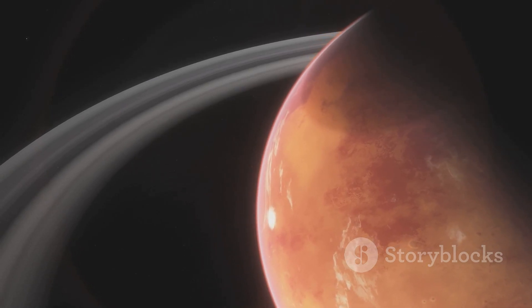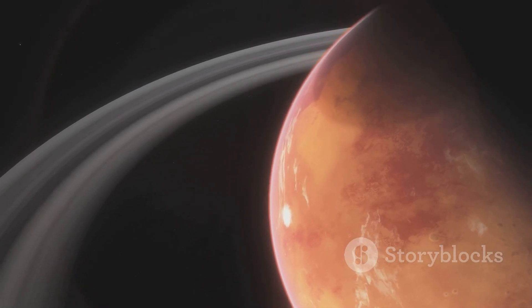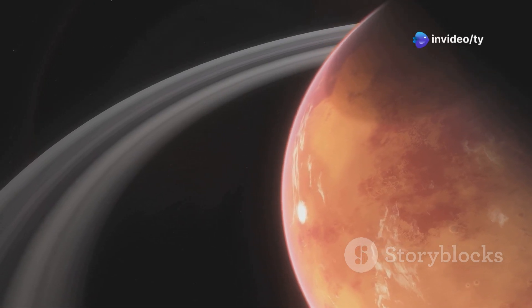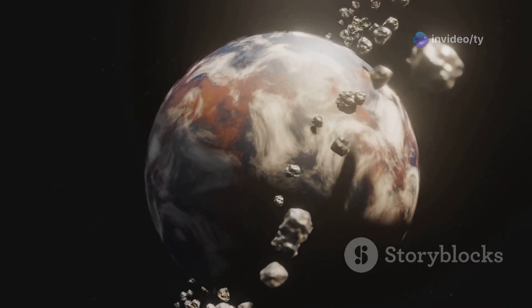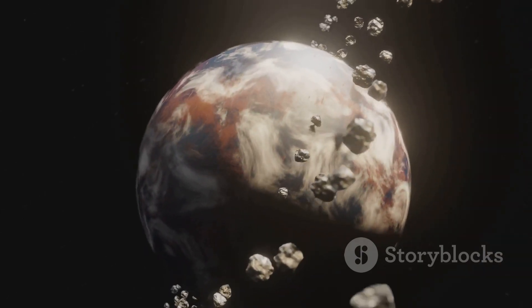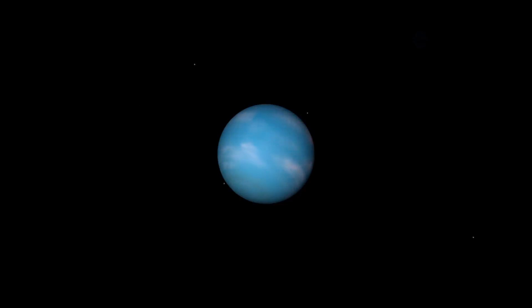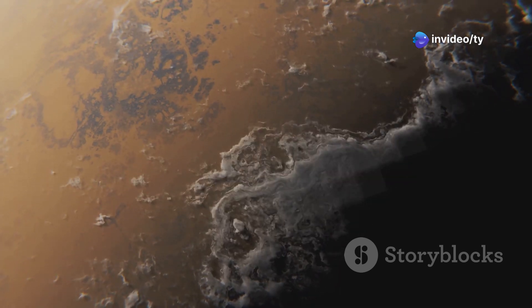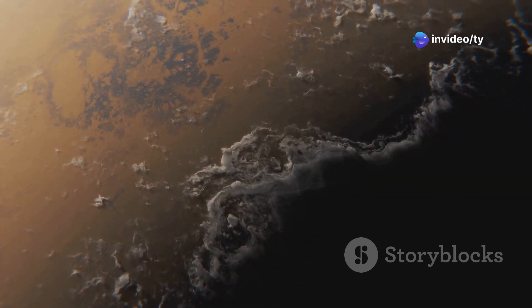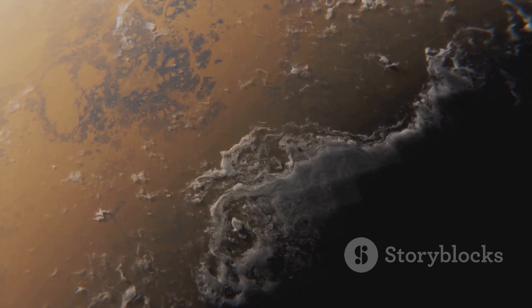HD 189733b is a world of extremes where the very elements conspire to create a landscape that is both beautiful and terrifying. This is a planet where it rains glass sideways. Imagine shards of glass being hurled at you by winds that are faster than any hurricane on earth. You heard that right. HD 189733b is known for its deep blue color but this isn't due to peaceful oceans. Instead the blue hue comes from the silicate particles in its atmosphere which scatter blue light. The planet's atmosphere is a turbulent inferno with winds whipping around at speeds of over 5,000 miles per hour. These winds are so powerful that they can carry the glass particles creating a deadly storm.